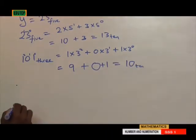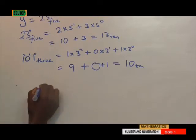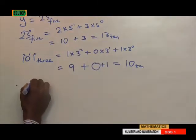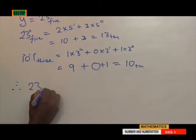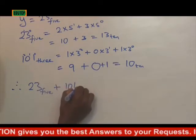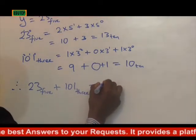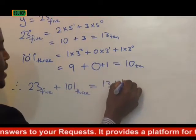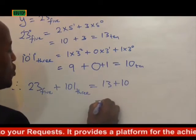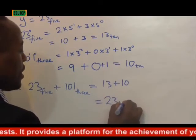We can now say that 23 base 5 plus 101 base 3 is equal to 13 plus 10, which is equal to 23 base 10.